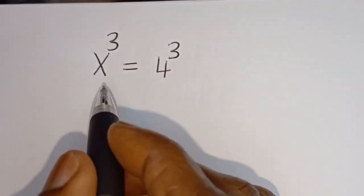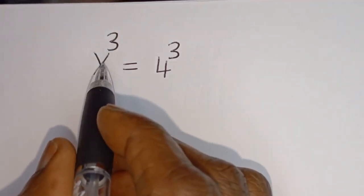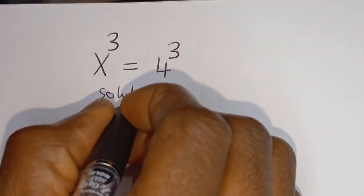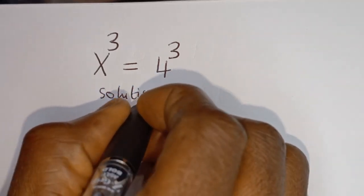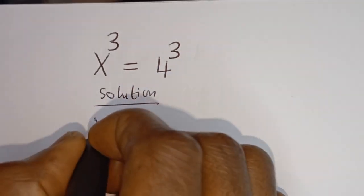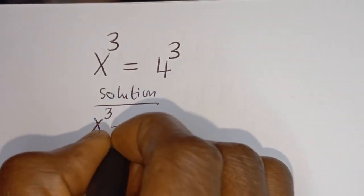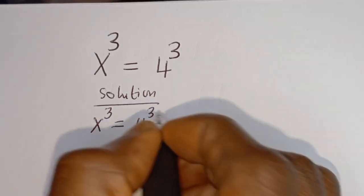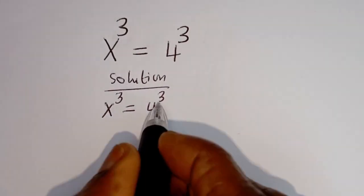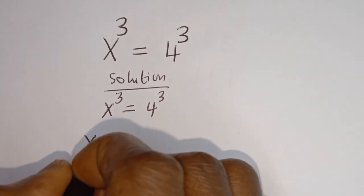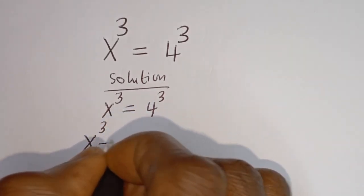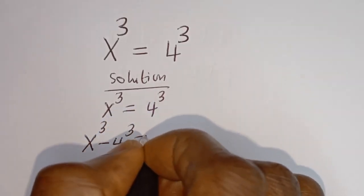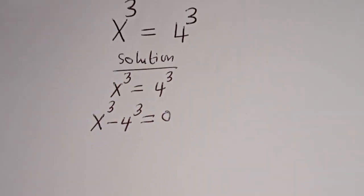Hello. How to solve for s in this equation: s to the power of 3 is equal to 4 to the power of 3. Solution: we have s to the power of 3 is equal to 4 to the power of 3. Now let's take this to this side — we have s to the power of 3 minus 4 to the power of 3 is equal to 0.